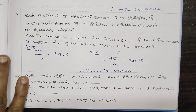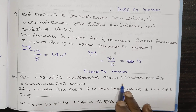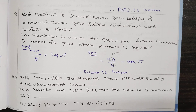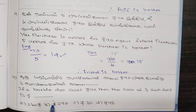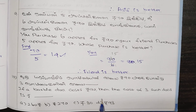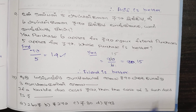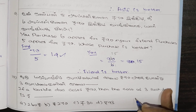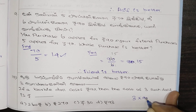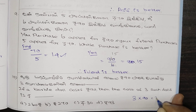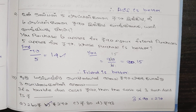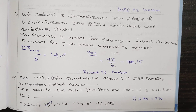Question 10: A Barbie doll costs 90 rupees. Then the cost of 3 such dolls is... We use direct proportion to find the answer. 3 times 90 equals 270 rupees.